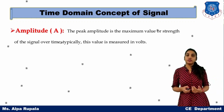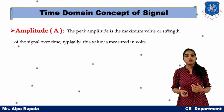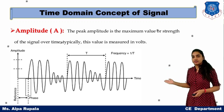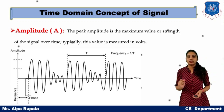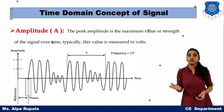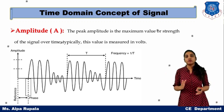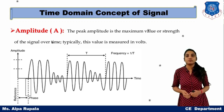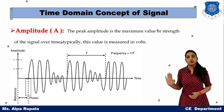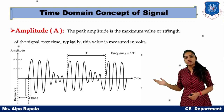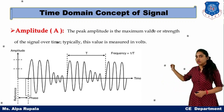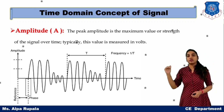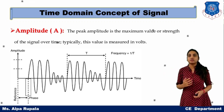Now some important definitions regarding the time domain concept. The first is amplitude. Amplitude is the strength of your signal. In the mathematical equation of a sine wave, capital A represents the peak amplitude — the maximum strength value of the signal within one time period T.